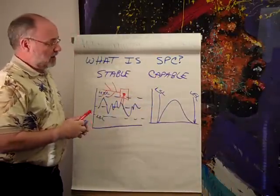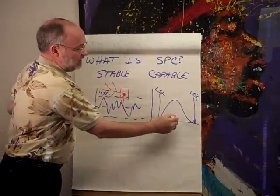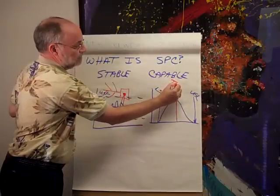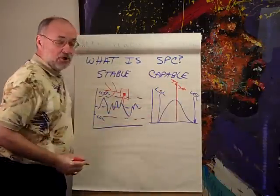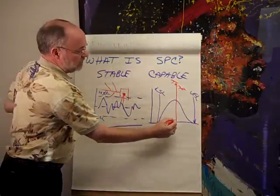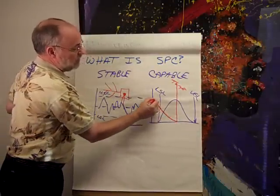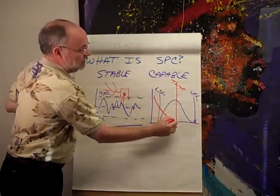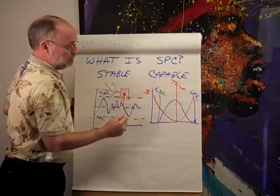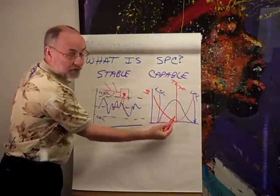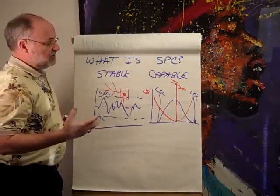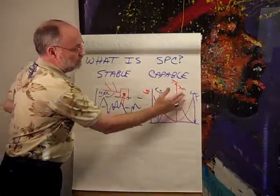The goal is to get the process to meet customer specifications, because there's actually a cost. The more you move away from your target value, there's an incurred cost — that's what's called the Taguchi loss function. He found that as you move away from your target value, there's a cost to society in dollars, and the further away you get, the greater the cost.